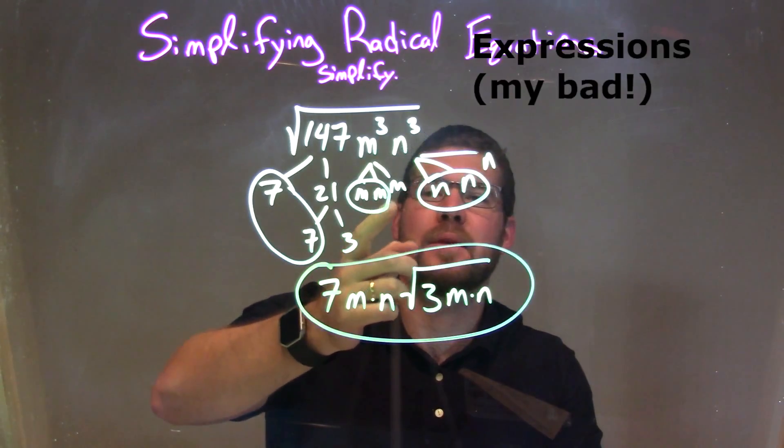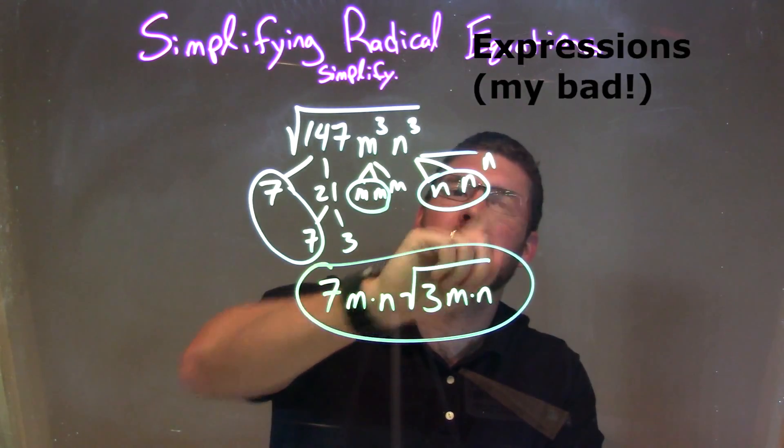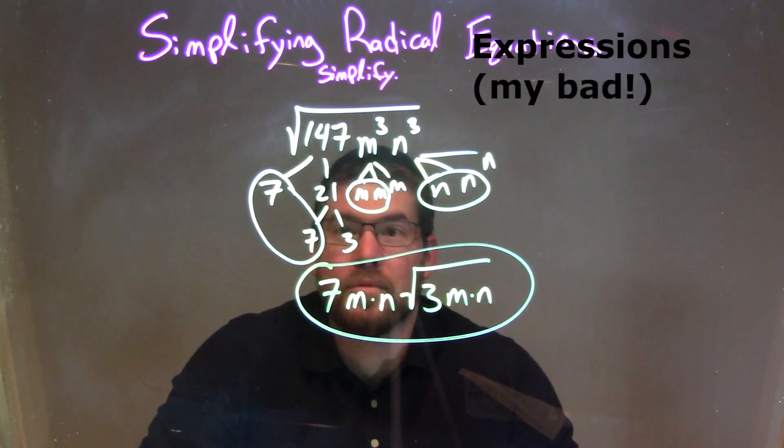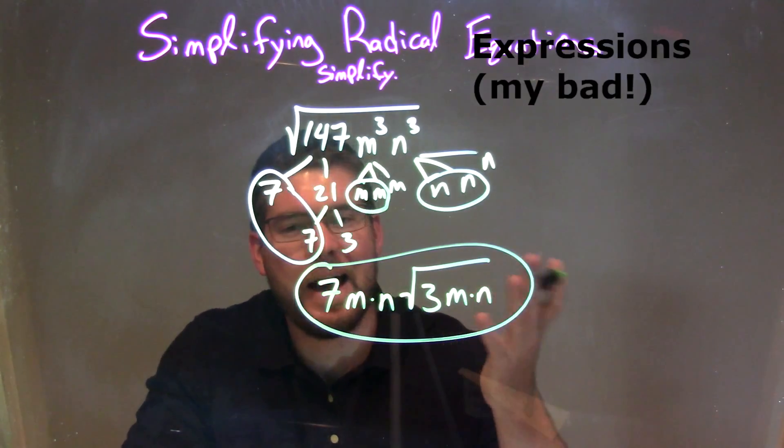And m to the third be m times m times m, and n to the third be n times n times n. I have a lot of m and m's here. Come on, that joke had to happen, you knew that.